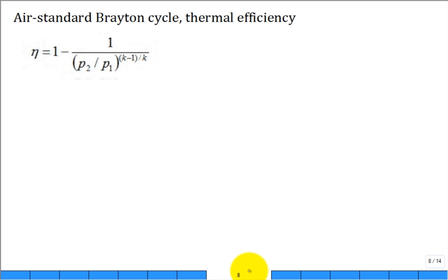Let's go ahead and derive this equation for the thermal efficiency of the air standard Brayton cycle assuming constant specific heats. Right away what I need to do is sketch the cycle. I'm going to talk about the compressor, the burner, the turbine and the heat exchanger.